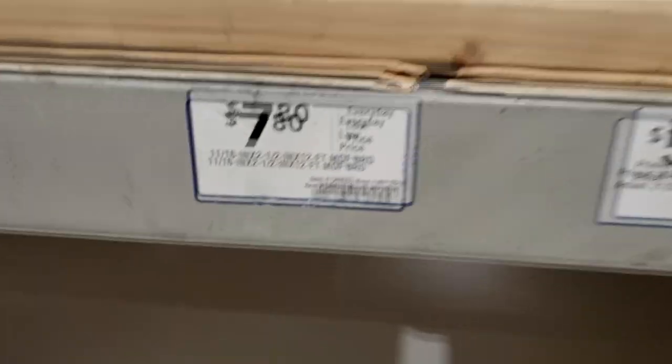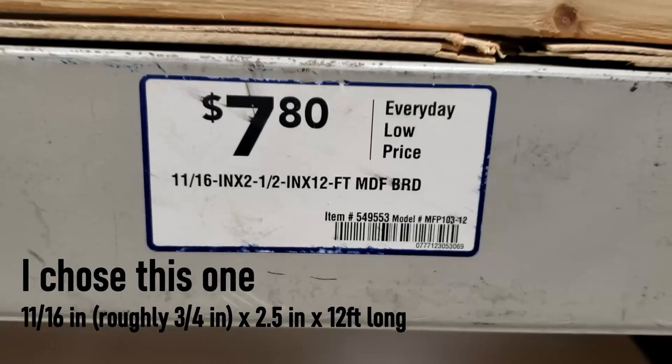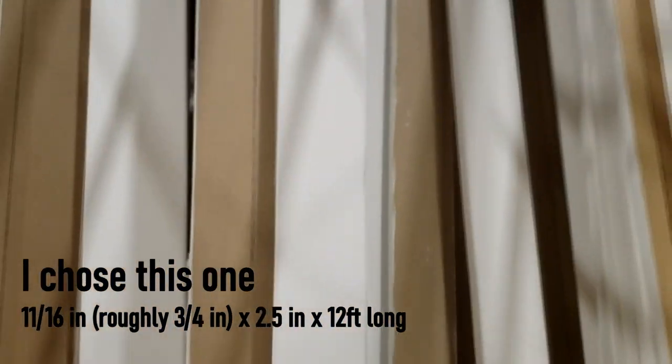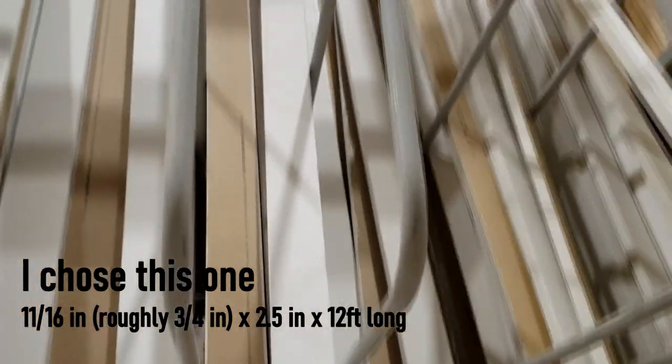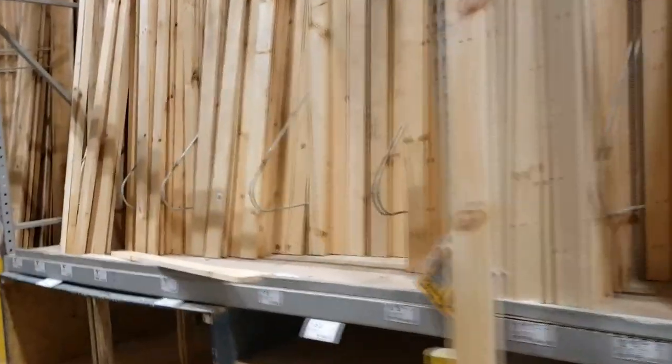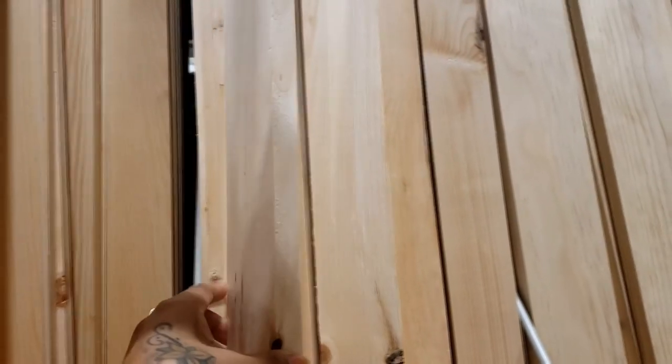So to start things off I had to figure out what size battens I wanted. I went to the store to check out what options that they had and ultimately I went with the MDF. It has a smooth finish. It's already primed so it's easy to paint. Plus it won't warp, split, or shrink. So to me that tells me it's long lasting. It'll stand the test of time. So that's what I decided to go with.